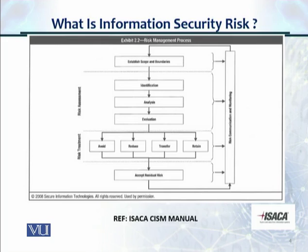Finally, you either avoid, reduce, transfer, or retain the risk. Avoidance means you stop the activity. Reducing risk means you mitigate and control it. Transfer means something like insurance — passing it on to another entity. Retain means you keep it, you sign off, and it becomes the residual risk, which management needs to accept.